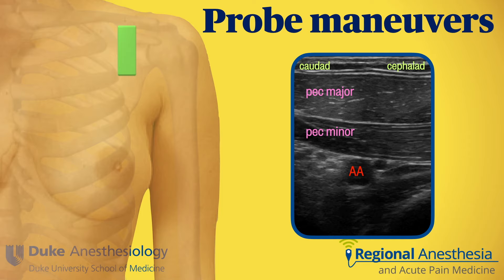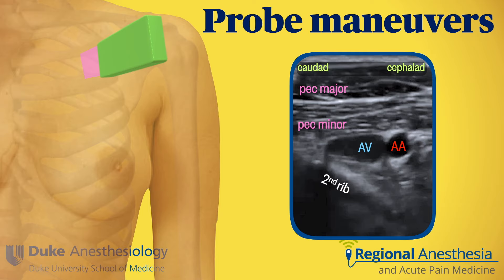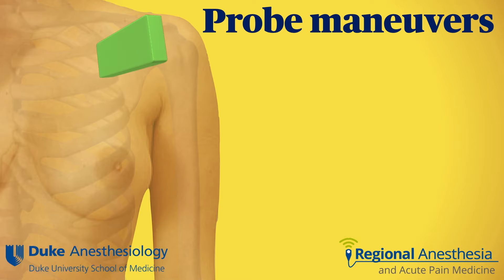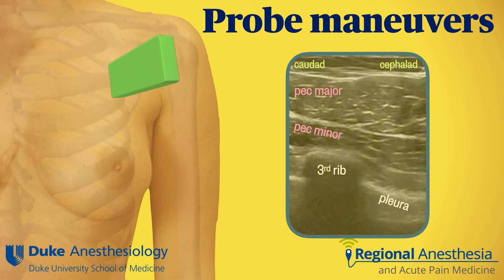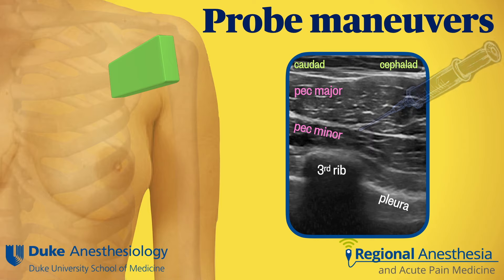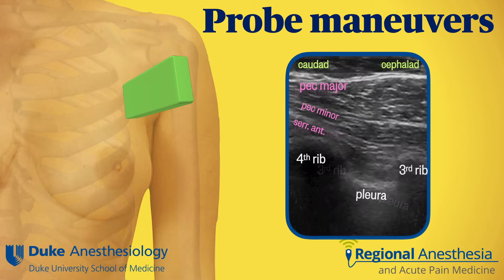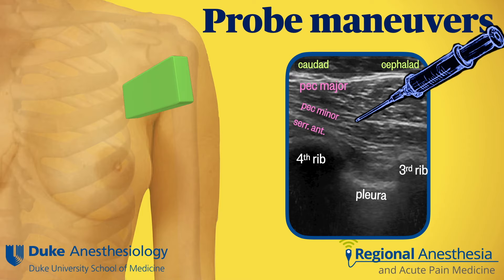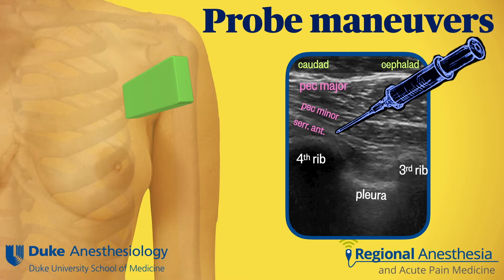There is a sequence of important probe maneuvers to see the correct anatomy and increase block success. First, tilt medially and then twist so the transducer is in line with the deltopectoral groove — this brings the chest wall into view underneath the axillary vessels. The rib directly underneath the axillary vein is the second rib. Translate inferiorly and laterally to find the third rib, where you can appreciate the fascial plane between the two pec muscles — the target for pecs 1. Continue inferolaterally to the fourth rib, where serratus anterior appears under pec minor; the plane between these two muscles is the target for pecs 2.